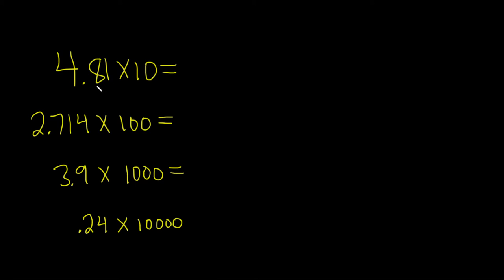So we take 4.81 and it's being multiplied by 10. It has one zero, so this means you move the decimal place over one time. So the answer here would be 48.1. Just move it to the right one time because it's one zero.